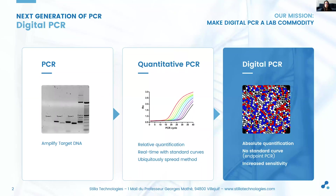Digital PCR is the third generation of the well-known polymerase chain reaction, or PCR, a widely adopted technique in the molecular biology toolkit. PCR allows for the detection of targeted nucleic sequences by specifically amplifying them in solution. By following the evolution of an increasing fluorescence signal as PCR occurs, the so-called quantitative version of PCR, qPCR, allows for the quantification of the targeted sequences as well.